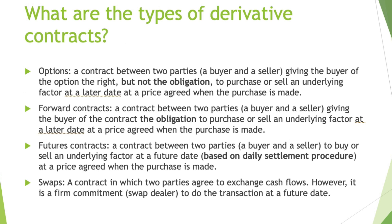What are the types of derivative contracts that we have? We have four types. First, we have options. Options is a contract between two parties, a buyer and a seller, giving the buyer of the option the right but not the obligation to purchase or sell an underlying factor. The second one is the forward contract. The forward contract is between two parties, and it gives the buyer the obligation to purchase or sell an underlying factor — which can be commodities, currencies, or stocks — at a later date, at a price agreed when the purchase is made.